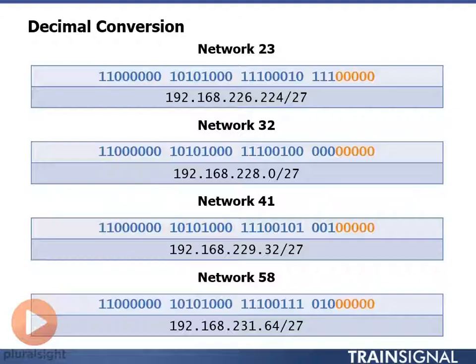Let's convert these to decimal. So network 23, 192.168.226.224/27. Network 32, 192.168.228.0/27. Network 41, 192.168.229.32/27.